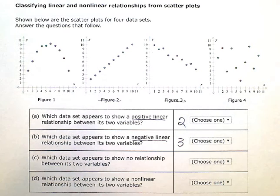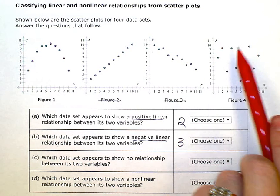Which data set appears to show no relationship between its two variables? That would be this one. There's no discernible pattern here.